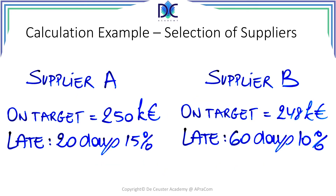Let's look at a more complicated example where we have to select between two suppliers. Supplier A will cost 250,000 euro when the supplier delivers on target. Supplier B will cost 248,000 euro. There is a probability that supplier A will be 20 days late with a probability of 15%, and for supplier B it would be 60 days late with a probability of 10%. Try to make the calculation — stop the presentation for a few minutes and find the expected value for supplier A and the expected value for supplier B.